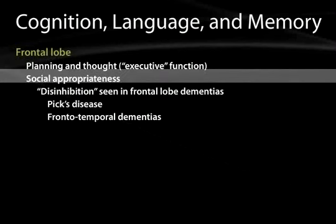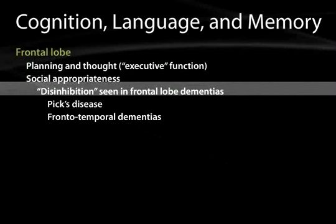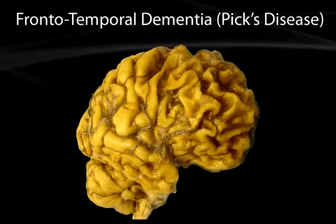Another important function subserved by the frontal lobe is social appropriateness. A person with a frontal lobe lesion may be disinhibited — saying inappropriate things at parties or taking off their clothes. This disinhibition is seen in frontotemporal dementias such as Pick's disease. Here is an image of the marked frontal lobe atrophy seen in Pick's disease, where the frontal lobe is preferentially atrophied with wide sulci and very narrow gyri — often called knife-edge atrophy.